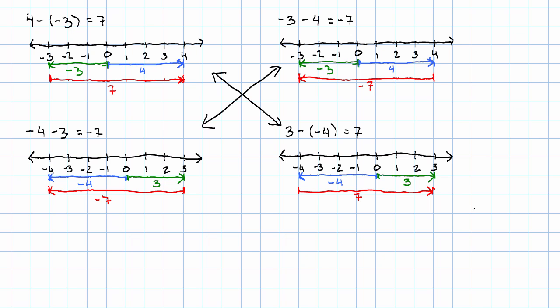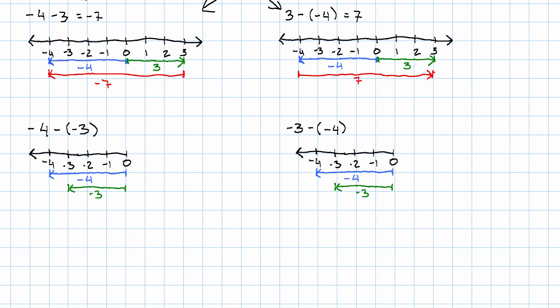Let's try with both of them negative. Negative 4 minus negative 3. I'm going to start at the end of negative 3 and go to the end of negative 4. That's negative 1.